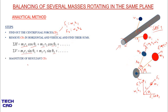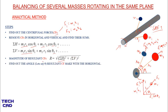The next step is to find the magnitude of the resultant centrifugal force. The resultant is the square root of the sum of the squares of the horizontal and vertical components. After that, we find the angle of the resultant using the formula: tangent theta equals the ratio of the sum of vertical components to the sum of horizontal components.